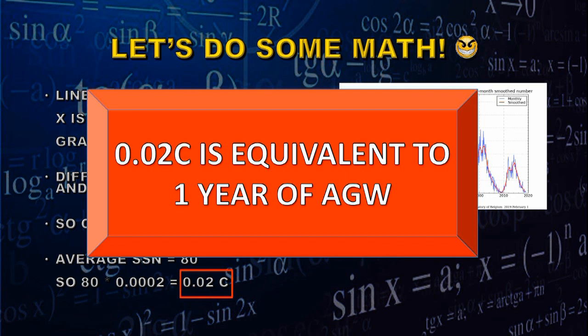That 0.02°C over 11 years is equivalent to just one year of anthropogenic global warming. And that's all you'd get for however long the Grand Solar Minimum continued. So one year of anthropogenic global warming would more than compensate for the cooling during a Grand Solar Minimum or during a Solar Minimum.